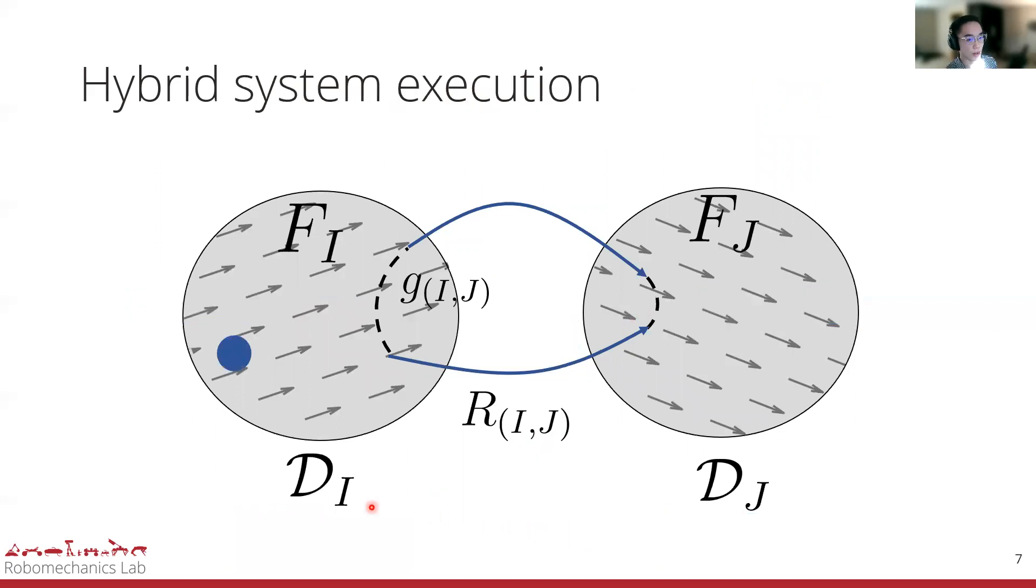Here's an example of a hybrid execution where a particle starts in hybrid mode I, flows with dynamics on FI, hits the guard, resets, and flows with the new dynamics. An important question to ask is what happens to neighboring particles that are delta X away? In this case, suppose T minus is the pre-transition time, and T plus we'll later see on is the post-transition time. Again, we flow with the old dynamics, hit the guard, reset, and flow with the new dynamics. But is there a way that we can formalize what delta T plus should be given delta T minus?